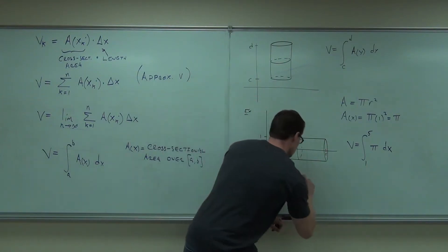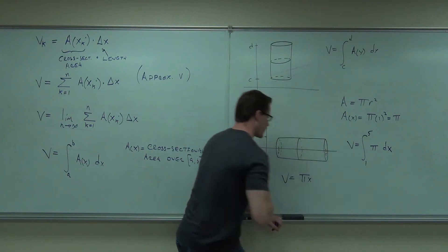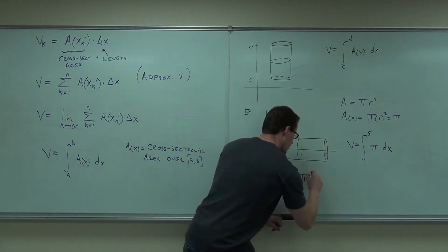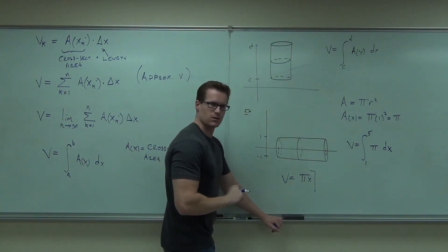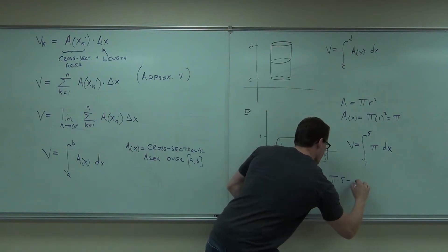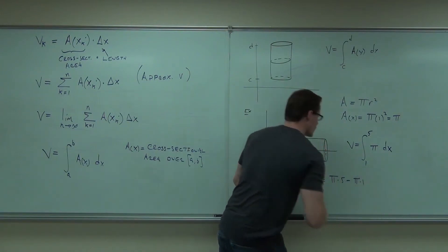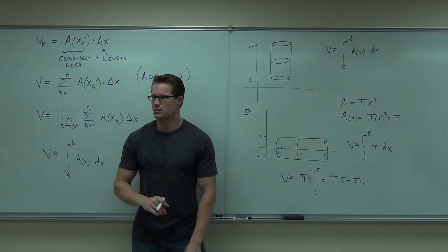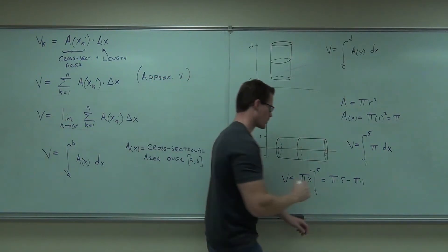What's the integral of π dx? π x. What little thing? That's your evaluation symbol. From where to where? So this says π times 5 minus π times 1. What's π times 5 minus π times 1? 4π. 4π.